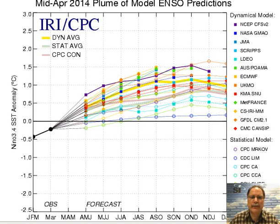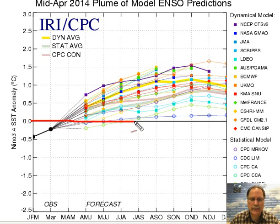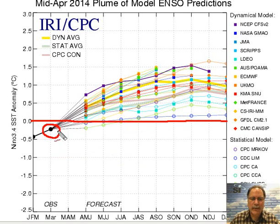We already gave a couple of reasons why El Niño will form: the warmer than normal temperatures below the surface and the increase relative to normal in temperatures at the equator in the tropical Pacific. A third reason is that almost all computer forecast models that predict El Niño or La Niña indicate the development of an El Niño over the summertime. This is from the International Research Institute website provided by Columbia University, and virtually all models produce El Niño by the time the summer rolls around in the June-July-August time frame.